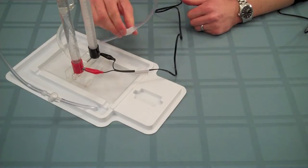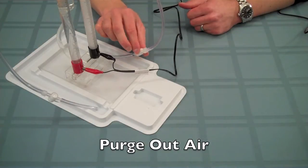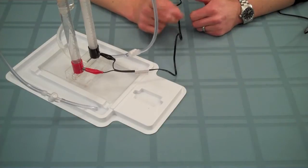Run the electrolyzer with both of the valves in the open position so that you purge out any excess air that's either in the storage columns or in the gas supply tubes. This will take about one minute.